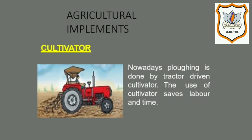Now comes the cultivator. The cultivator is a tractor-driven agricultural implement used for loosening and turning the soil in the field quickly. Turning the soil means turning it up and down. A cultivator has many plowshares which can dig into a considerable area of soil at the same time, loosen it, and turn it. Due to this, many fields can be plowed in a short period of time. Nowadays, plowing of large fields is done using a tractor-driven cultivator.